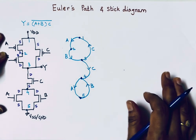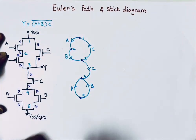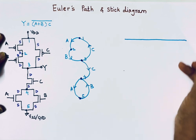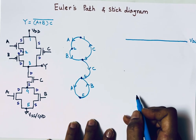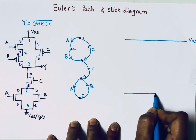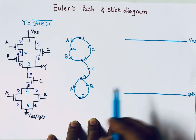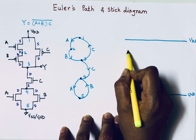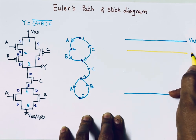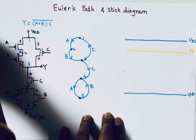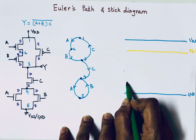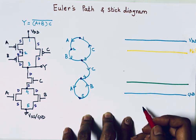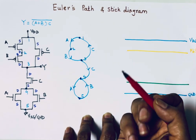We draw a VDD line and a ground line using metal layers, represented in blue. Blue is for VDD and VSS/ground. For P-channel MOSFETs we use P-diffusion, represented in yellow. For N-channel MOSFETs we use N-diffusion, represented in green. The MOSFET channel is made of polysilicon material, represented in orange or red.